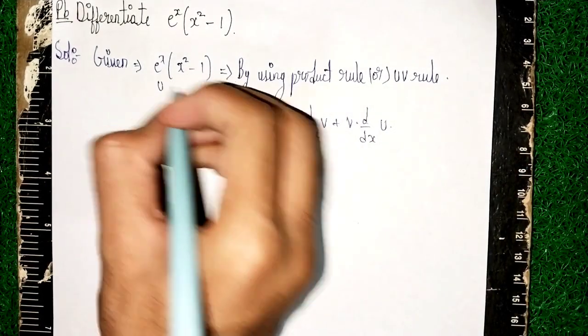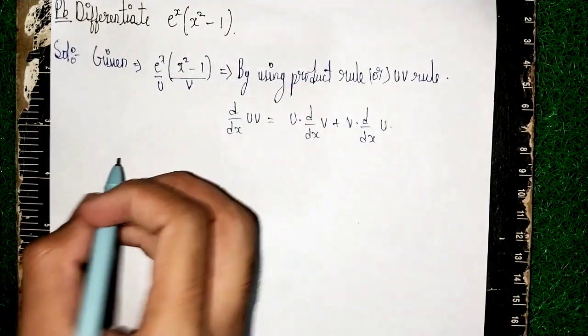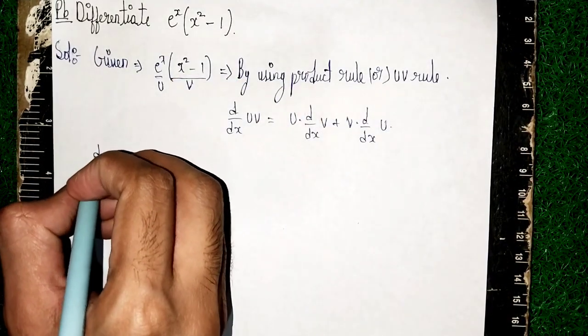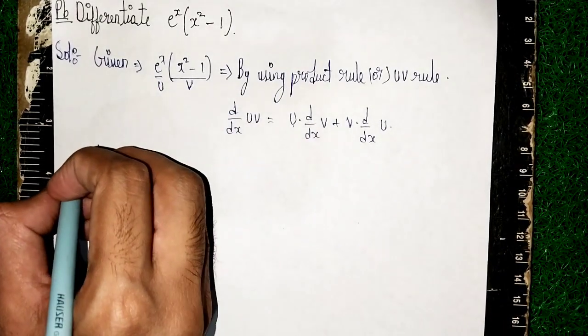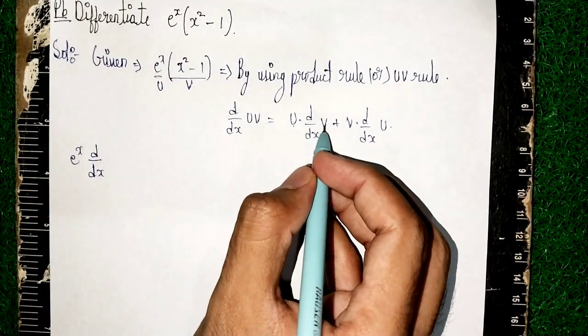Now this is u and this whole term is v. This is v and this is u. Now apply this. So d/dx, now here u is what? e^x. e^x into d/dx of v is what? x^2 - 1.